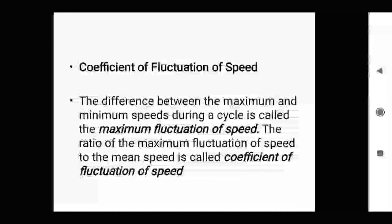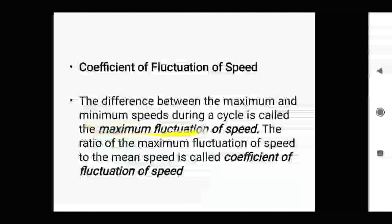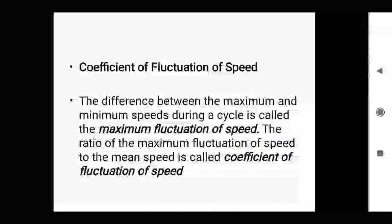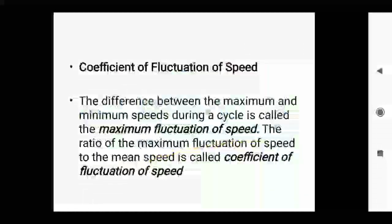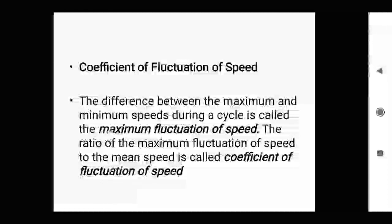The next concept is the coefficient of fluctuation of energy. The coefficient of fluctuation of speed is the difference between the maximum and minimum speeds during a cycle — this is called the maximum fluctuation of speed. If I take the difference between the flywheel speed in the power stroke and the compression stroke, I will get the maximum fluctuation of speed.